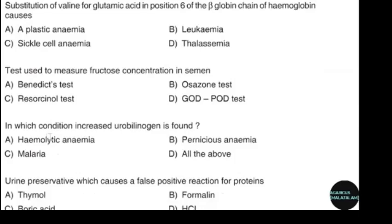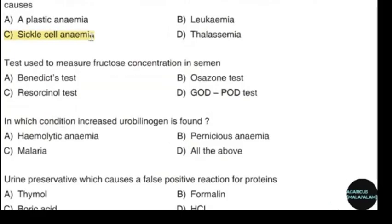Substitution of valine for glutamic acid in position 6 of the beta-globin chain of hemoglobin causes sickle cell anemia. Correct answer: option C. Test used to measure fructose concentration in semen. Correct answer: option C.